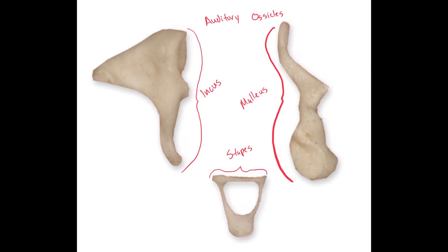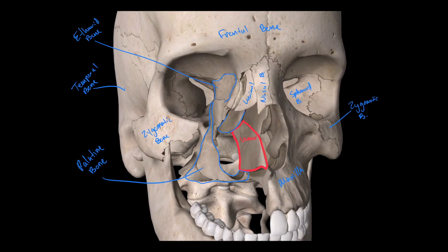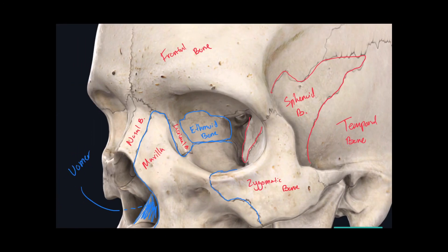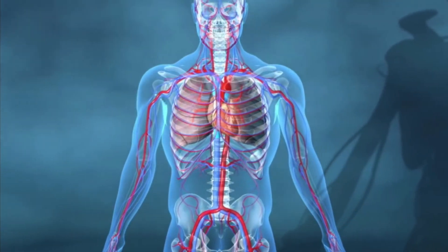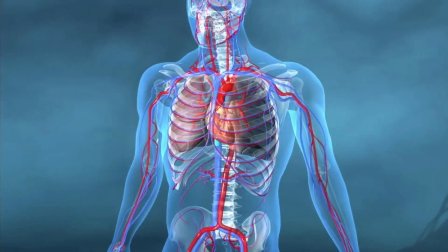Those are all the bones found in the head. In later videos I'm going to be going over landmarks found in each of these bones. I just wanted to simplify this first, since students get really confused, so we went over the names of the bones first and then we'll go over the landmarks. Hope this video was educational and helpful — I'll see you guys later.